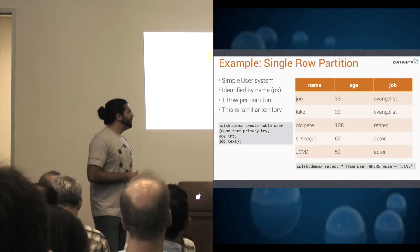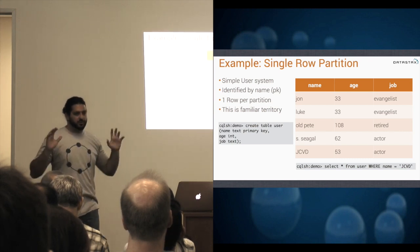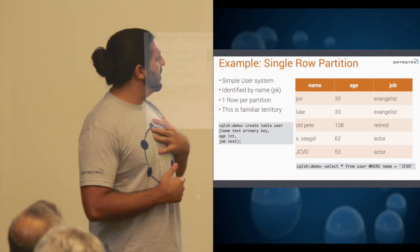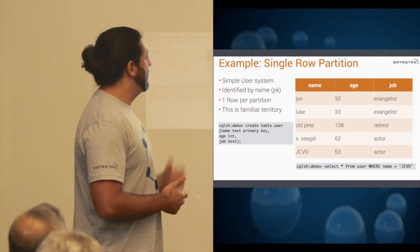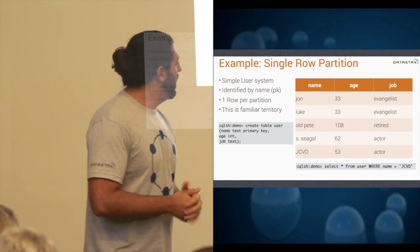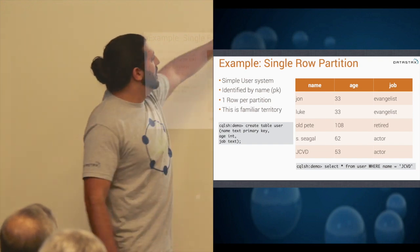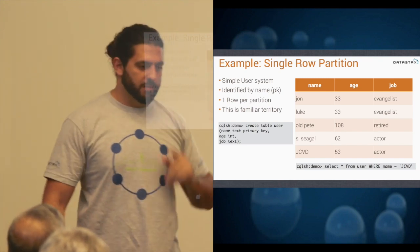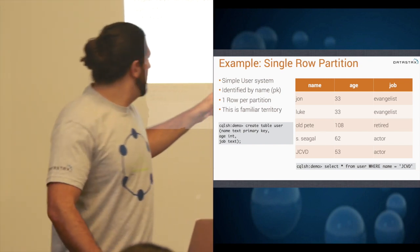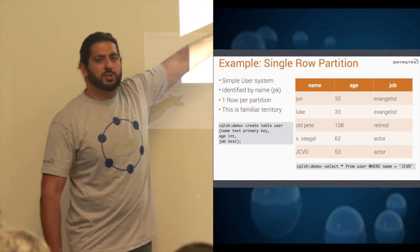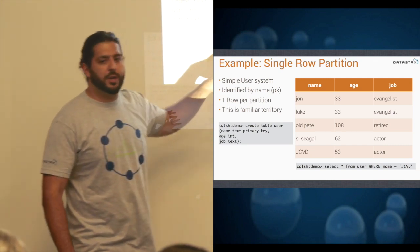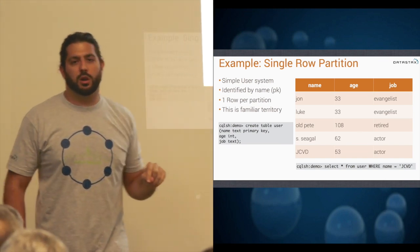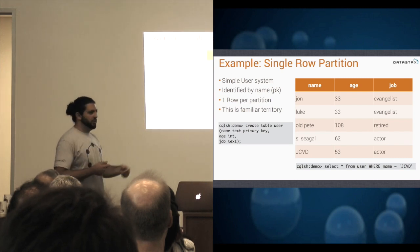As I mentioned, we have our user system, which is identified by name in this case. This is a really simple data model — I don't recommend you use name as a primary key. We've got me — I'm an evangelist — we have Luke, also an evangelist, and some other people. To create this table, we have a relatively straightforward CREATE TABLE statement, similar to what you'd see in any relational database. Because we only have name listed as our primary key, this is our partition key — that controls where in the hash ring this data lives. So if you're selecting where you're looking for John-Claude Van Damme, you know where in the ring that belongs. You don't have to query every node — if you have 100 nodes, you only have to look at one.